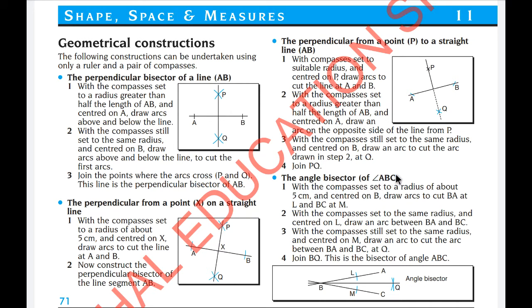The angle bisector, which means you are dividing the given angle into two equal parts. The angle bisector of ABC: with the compasses set to a radius about 5 cm and centered on B, draw arcs to cut BA at L and BC at M. With the compasses set to the same radius and centered on L, draw an arc between BA and BC. With the compasses set to the same radius and centered on M, draw an arc to cut the arc between BA and BC at O. Join B and Q. This is the bisector of angle ABC.